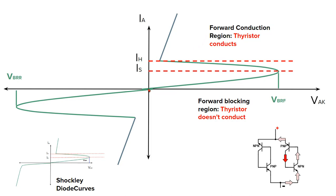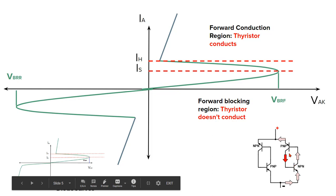You can observe that when we go from 0 to the forward breakover voltage, because the DIAC was not conducting, the voltage drop was very high. This line shows the voltage drop — we were increasing the current but the DIAC was not able to conduct. So the voltage drop was very high. But once the forward breakover voltage is reached, the voltage drop suddenly decreases and the DIAC starts conducting. This is because this common junction — the junction between the collector and base of the NPN — is reverse biased.